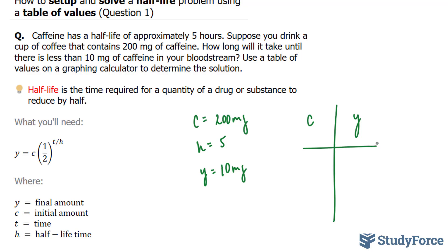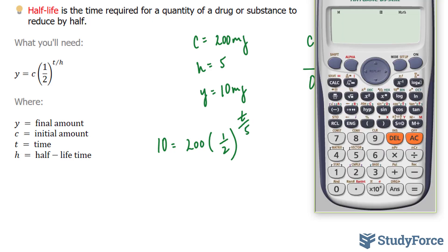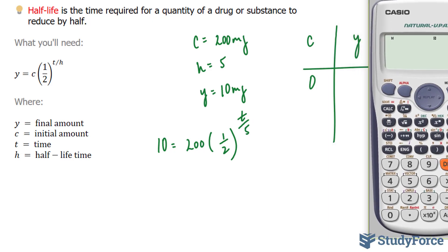And what I'll do is start off at time 0. To find out the quantity at time 0, I'm going to set up my equation. 10 is equal to 200 bracket half to the power of t over 5. And I'm going to use my calculator to find out what my y value will be when I place 0 into this equation.